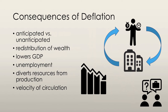The effects of deflation depend on whether or not it is anticipated or unanticipated. Deflation is so rare, though, that it is generally unanticipated. Unanticipated deflation results in a redistribution of income and wealth, lowers real GDP and increases unemployment, and diverts resources from production.